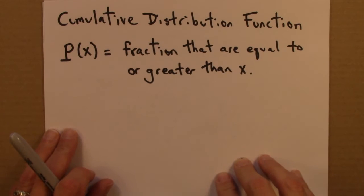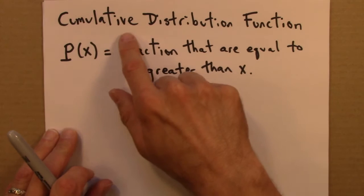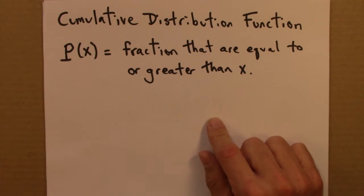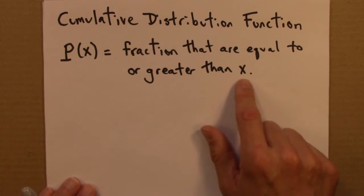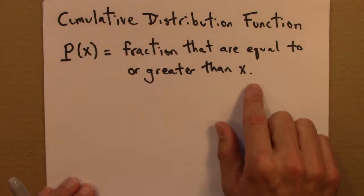The cumulative distribution function is defined as follows. Capital P of X, that denotes the cumulative distribution function, is defined as the fraction of your data that have a value equal to or greater than X. And the best way to come to understand this is to just start constructing one of these things. So I'm going to do that now.